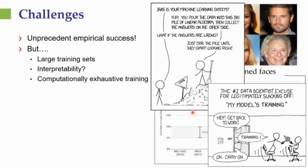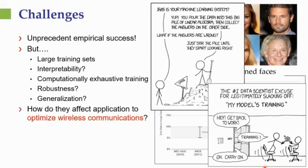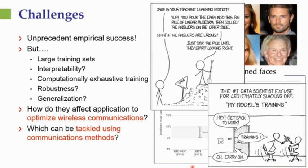Furthermore, training time can now be substantial, as we can also see in this comic, which states that the number one excuse data scientists use for slacking off is, well, my model is now training. There are obviously other challenges associated with deep networks like robustness and generalization. And in this tutorial, which is about machine learning and wireless communication, we will try to focus on two main questions. First is, can we exploit the advantages and the benefits of machine learning tools while mitigating their challenges to allow them to optimize wireless networks? In addition, we will also attempt to answer the question, which of the challenges associated with machine learning can be tackled using communication methods?